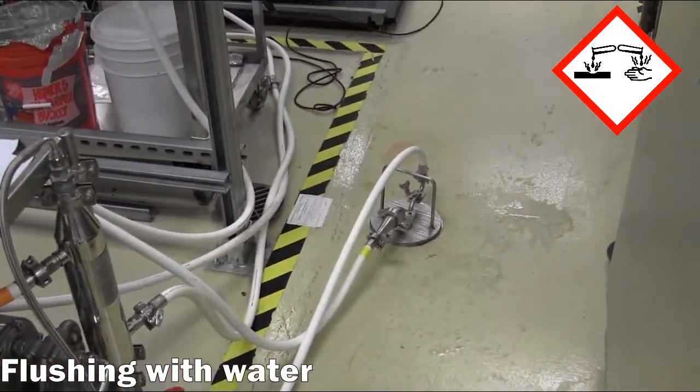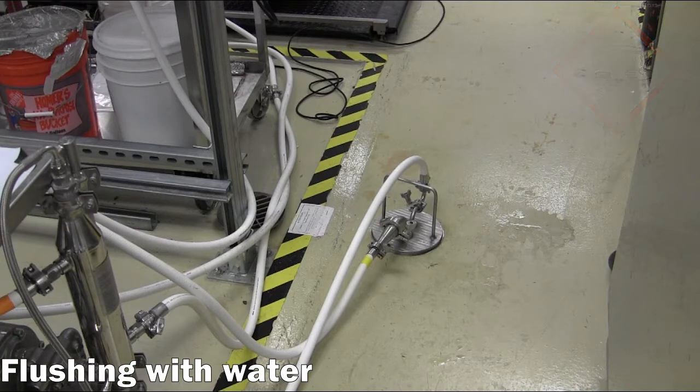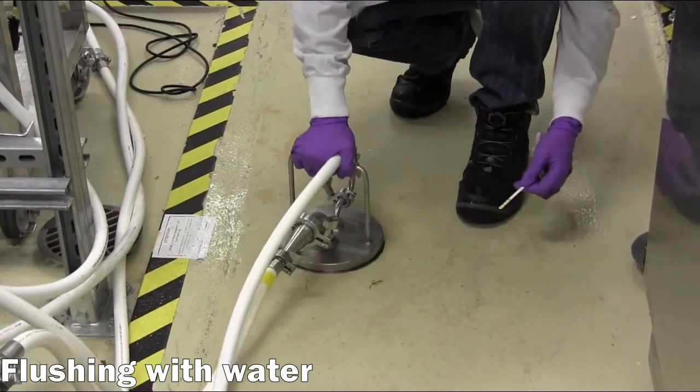The caustic solution will be gradually flushed out until a neutral pH is reached on the permeate outlet stream, as measured with a pH test strip or pH meter.